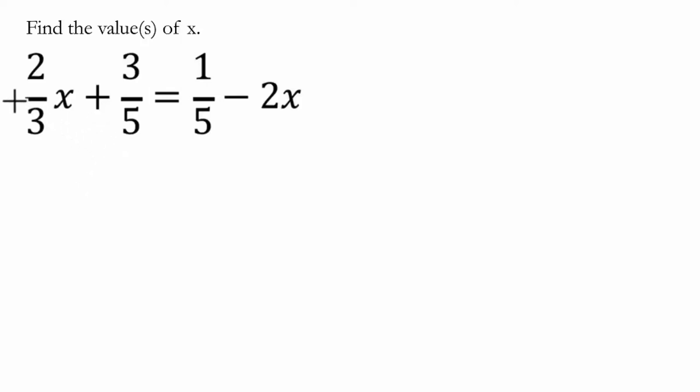In this problem, we are trying to find the values of x that balance this equation. The friendliest way to do this is to multiply by 15. That's the least common multiple of 3 and 5, and that will essentially cancel out these denominators so that I'm working with an easier fraction.